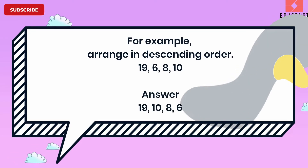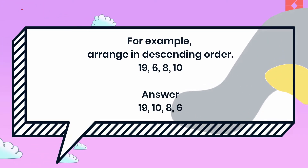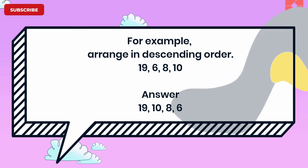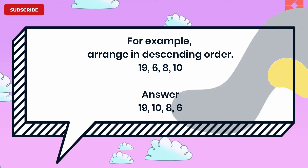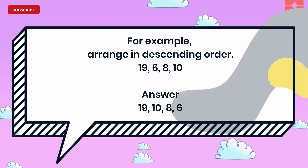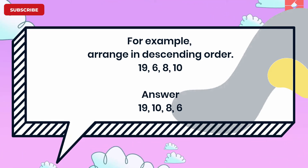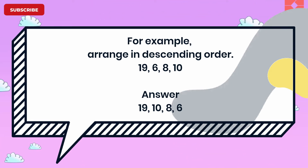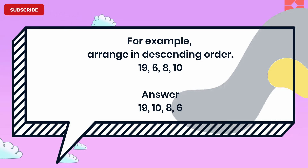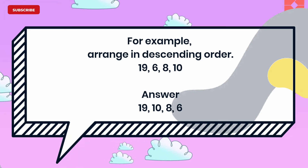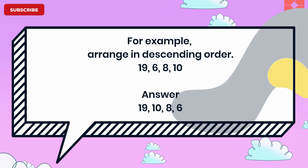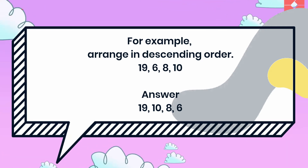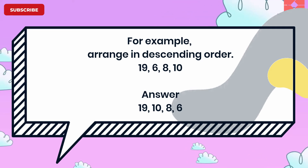Arrange the numbers 19, 6, 8, 10 in descending order. How will you proceed? As per our rule, we'll start with 19 since 19 comes first in backward counting among these four numbers. Then from the remaining numbers, we follow the same pattern: followed by 10, 8, and 6.